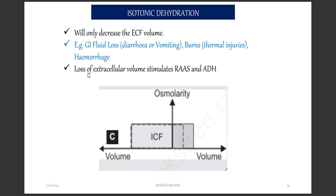Loss of extracellular volume can stimulate the RAS — the renin-angiotensin-aldosterone system — and ADH. ADH promotes the reabsorption of water. When you've lost a lot of water from the blood, ADH causes water to be reabsorbed, reducing urine output. Instead of a lot of water going out in urine, you want to take water back into the body. That's what ADH and the RAS system do.